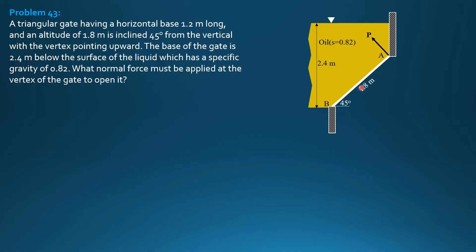So the gate is triangular, 45 degrees with horizontal. Then the base is horizontal, 2.4 meters below the oil surface of specific gravity 0.82. This is the normal force perpendicular to the plane of the gate required to open it. So this is the gate and it is 1.2 meters by 1.8 meters high.